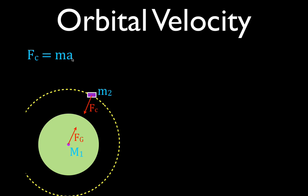Newton's second law states that force equals mass times acceleration. The acceleration for an object moving on a circular path is equal to the velocity of the object squared divided by the radius of the curved path. We can calculate the centripetal force by multiplying the mass of the object times the square of the velocity, then dividing by the radius of the curved path.